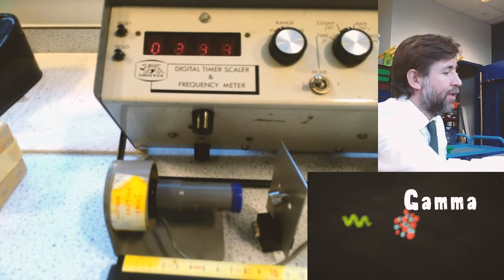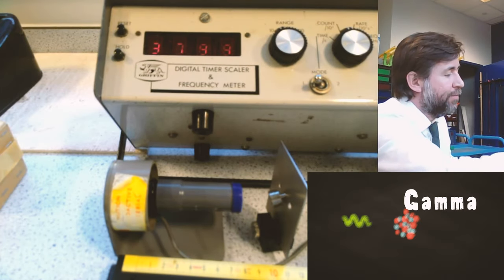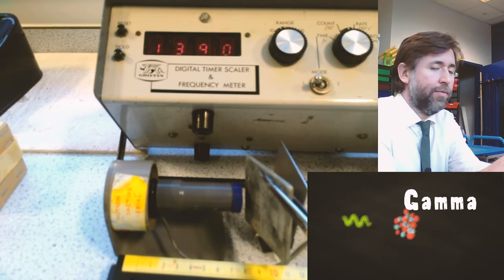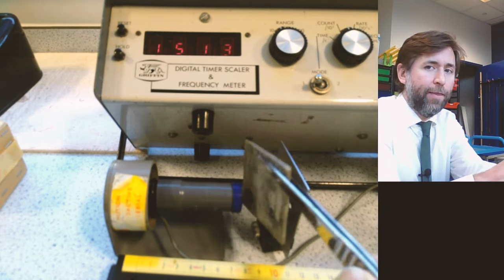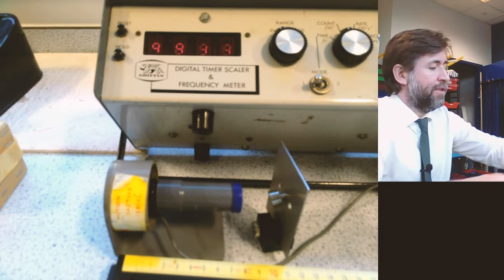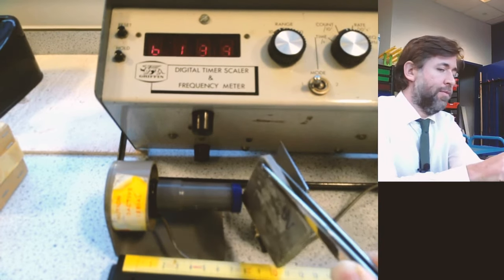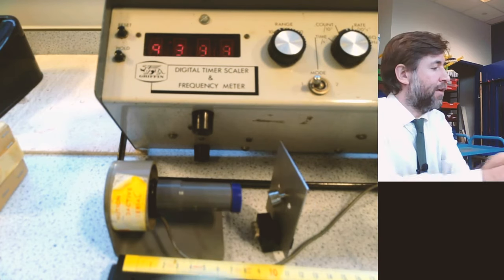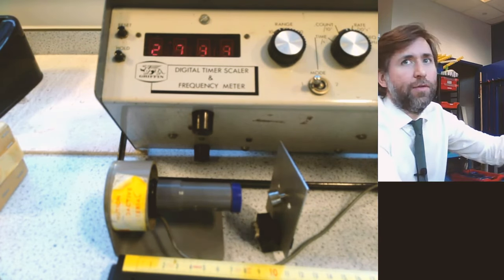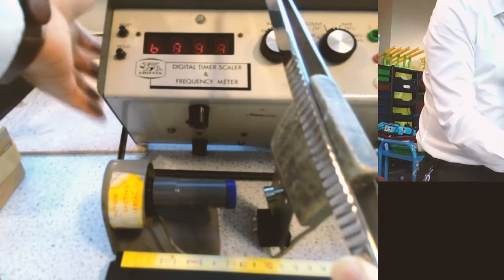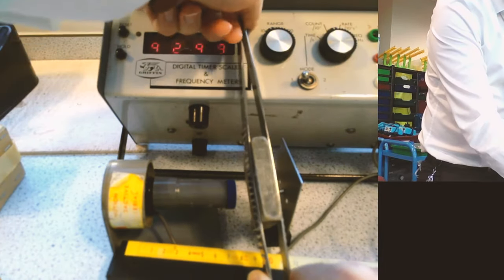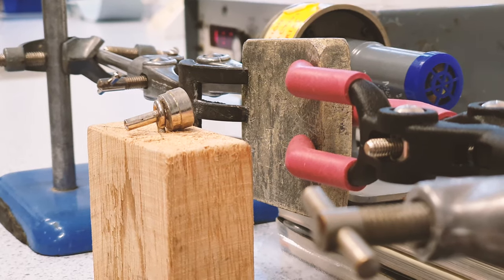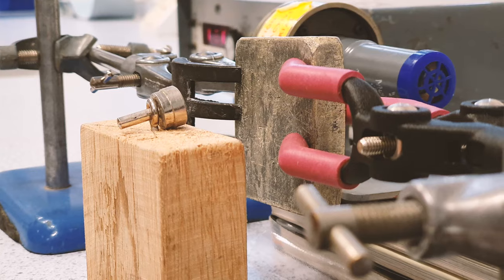And so what do I need to block gamma? Well you need thick lead. So here is about a millimeter of lead. Not entirely blocked. About half a centimeter of lead. And then about a couple of centimeters of lead. And you can see it's mostly stopped by that. It takes very thick lead to stop gamma radiation.